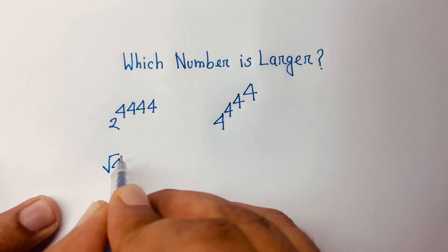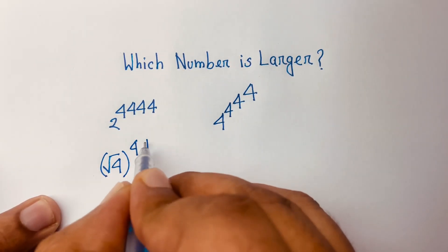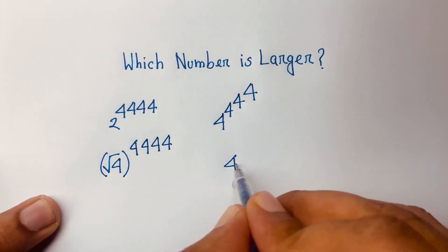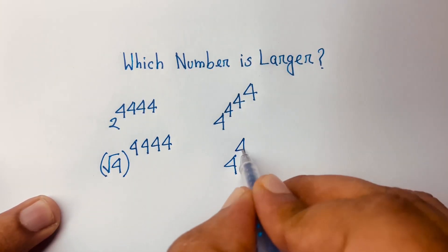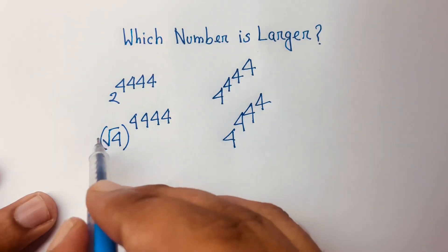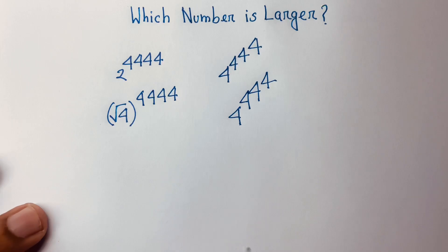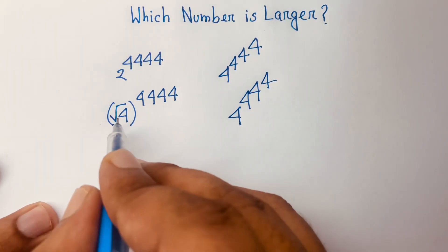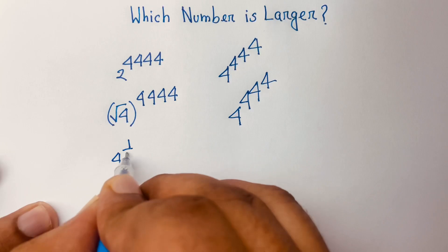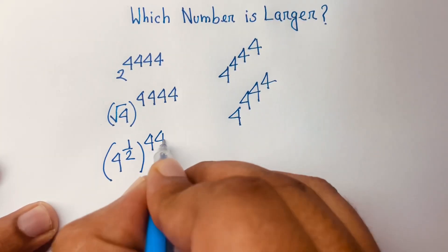I can write the 2 side as square root of 4, raised to the power 4, 4, 4. And here is 4 to the power 4, 4, 4. We know that square root of 4 equals 4 to the power one-half, so the left side becomes 4 to the power one-half, all raised to the power 4, 4, 4.